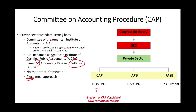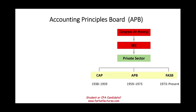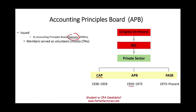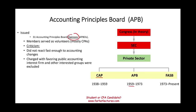On the CPA exam, note that the CAP issued bulletins. The Accounting Principles Board (APB), which came after the CAP from 1959 to 1973, issued opinions — Accounting Principles Board Opinions (APBOs) — rather than research bulletins. The APB members were mostly volunteer CPAs. Criticism included that it did not react fast enough to accounting changes, still used a piecemeal approach, was criticized for favoring public accounting interests, and lacked a theoretical framework.